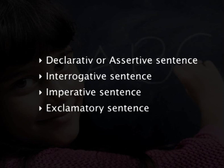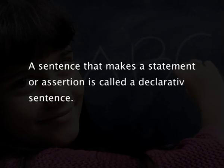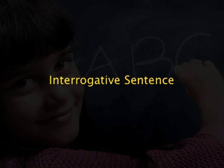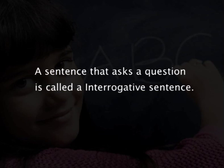Let us look at each type of sentence in detail. The first one: the declarative or assertive sentence. A sentence that makes a statement or assertion is called a declarative sentence. For example: 'I want to learn English well' or 'she knows five languages'. The second type: interrogative sentence. A sentence that asks a question is called an interrogative sentence. For example: 'where do you live?' or 'may I borrow your book?'